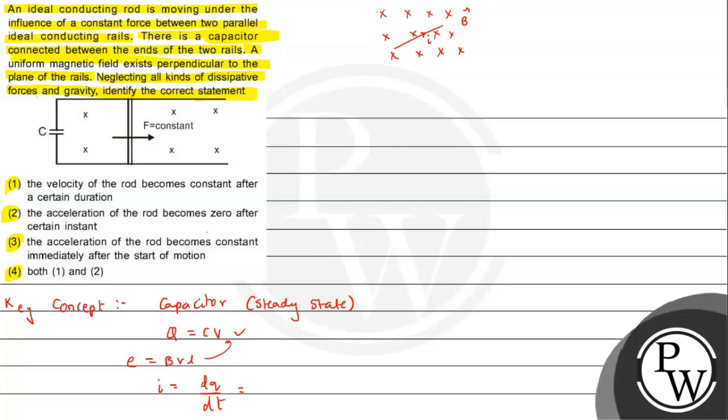That force is given by the right hand palm rule. According to right hand palm rule, we have to point the finger in the direction of magnetic field and thumb in the direction of current, so the palm will give the direction of force. These are few basic points that we need to keep in mind.